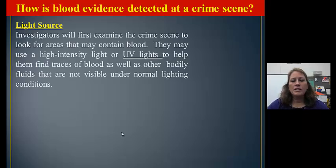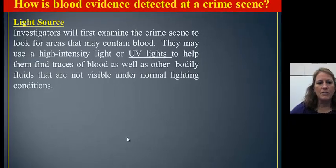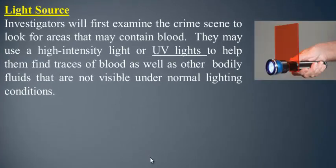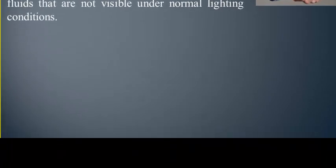Forensic scientists at a crime scene, CSIs, will use different types of sources to detect the evidence. You may have seen this on different TV shows. They could use a different light source, something as simple as a flashlight with a particular filter on it. It may not be visible to the naked eye, but the particular filter and UV lights can detect that.